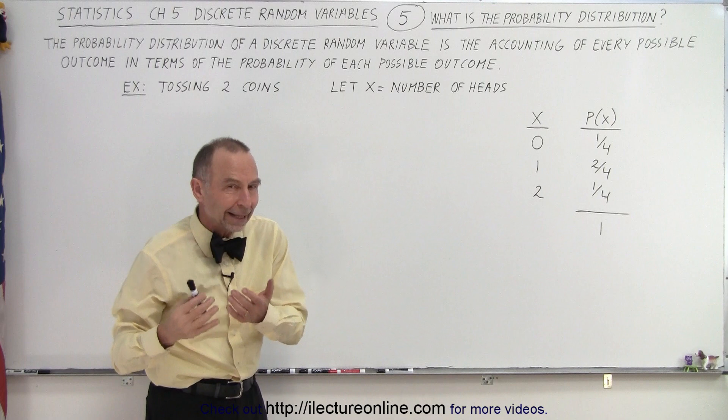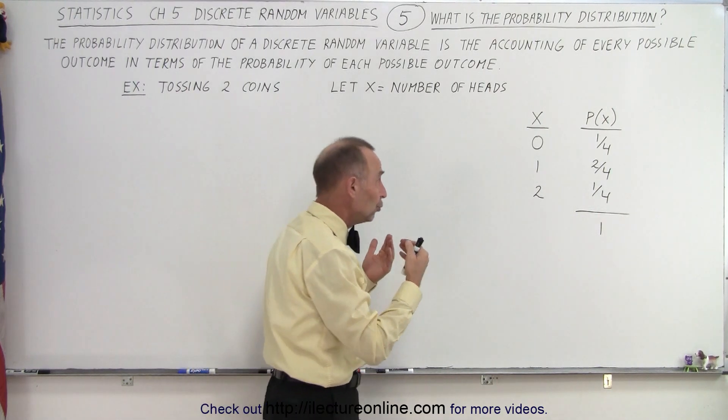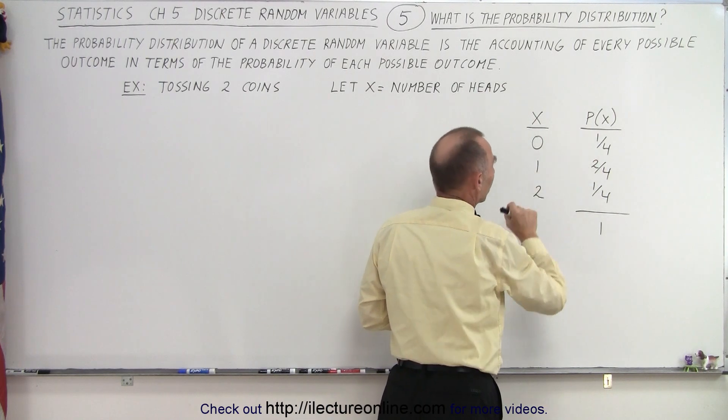So what is the probability that each of those outcomes will occur? Well, the outcome when neither one of the coins is a head is one in four.